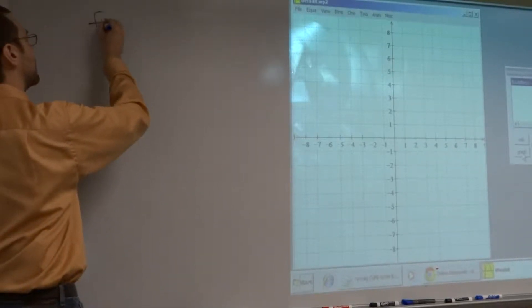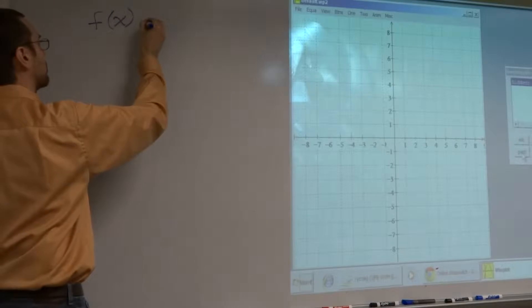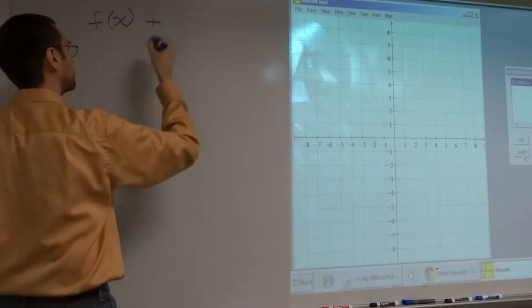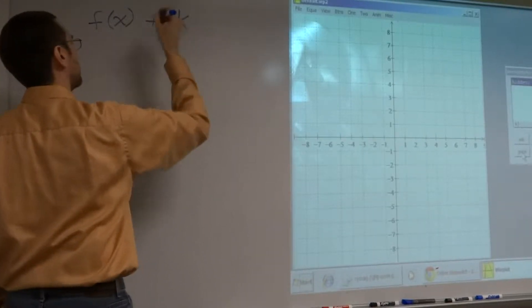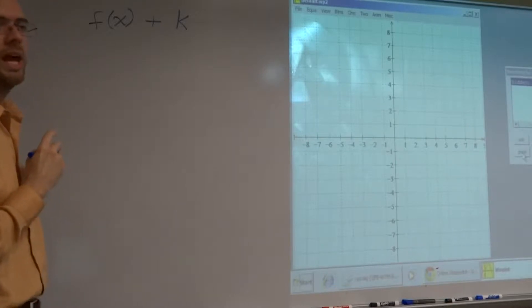One of the first things we see about adjusting these shapes is when you see something that's of this form, f of x plus k.